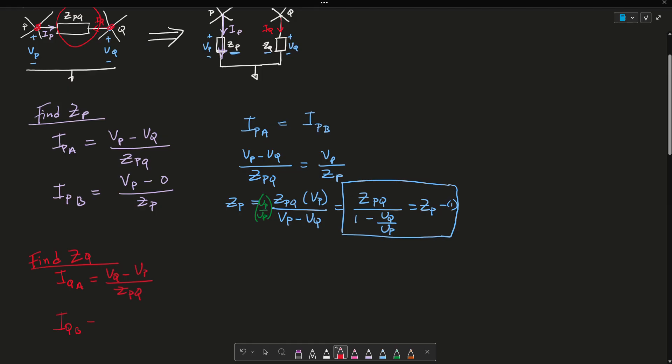So IQ is I'm going to start at this node, subtract it from this node, and then divide by this impedance, and that's going to give me my IQ in circuit A. And then for circuit B, my IQB is simply equals to VQ minus 0 over ZQ. I hope you see how I get that.